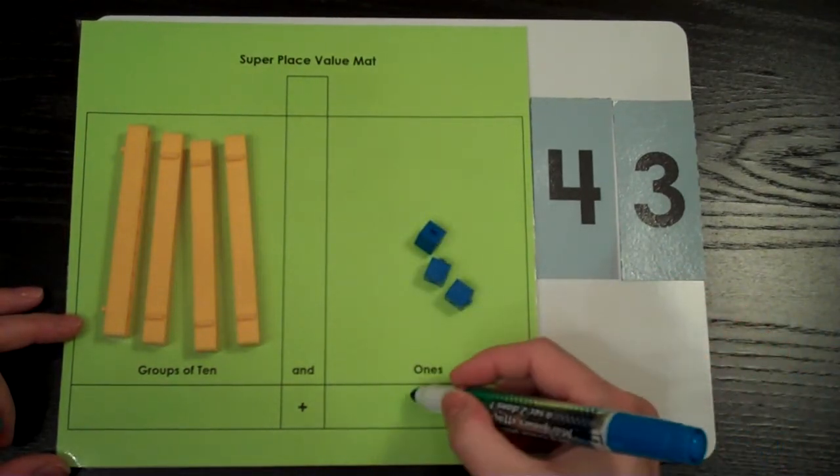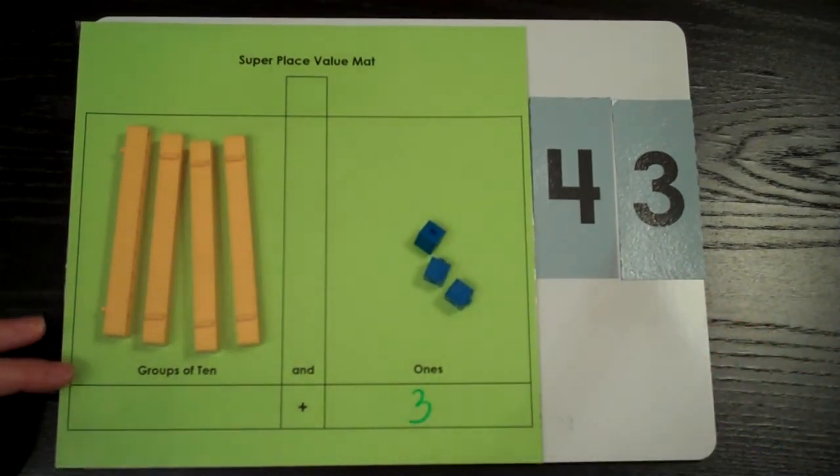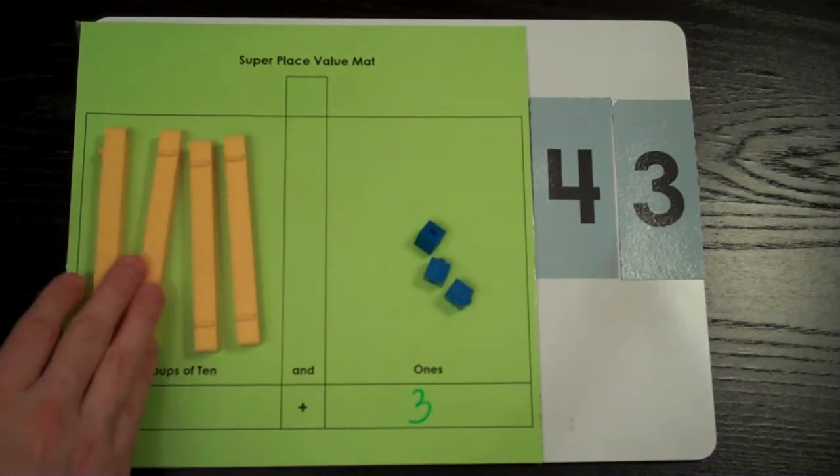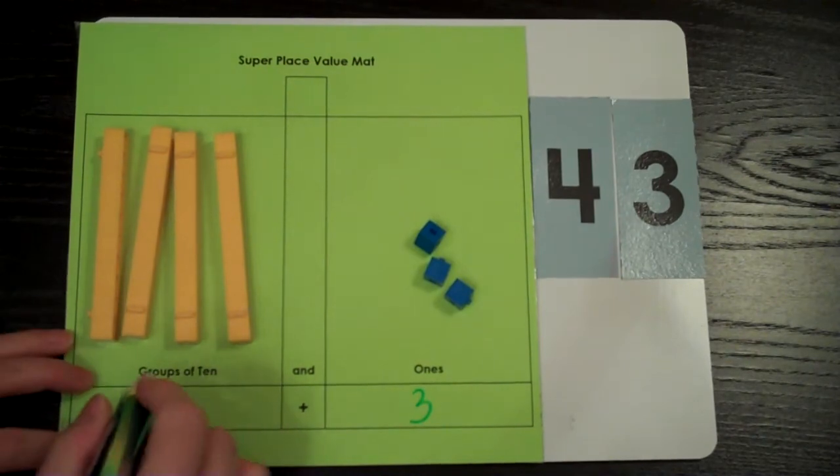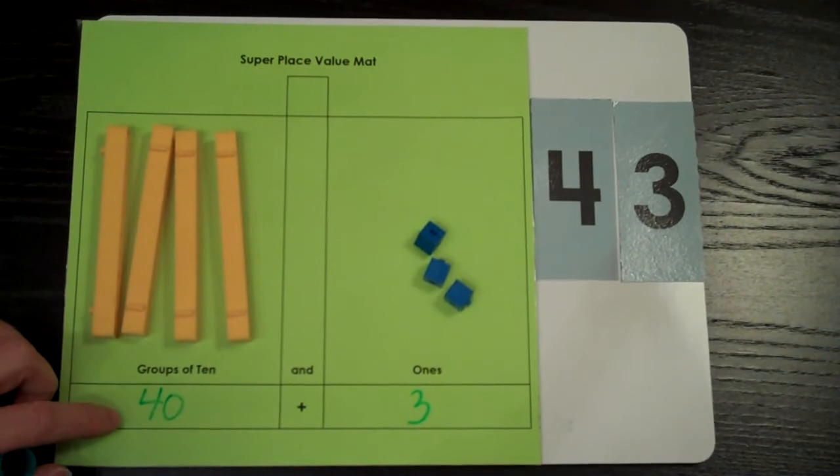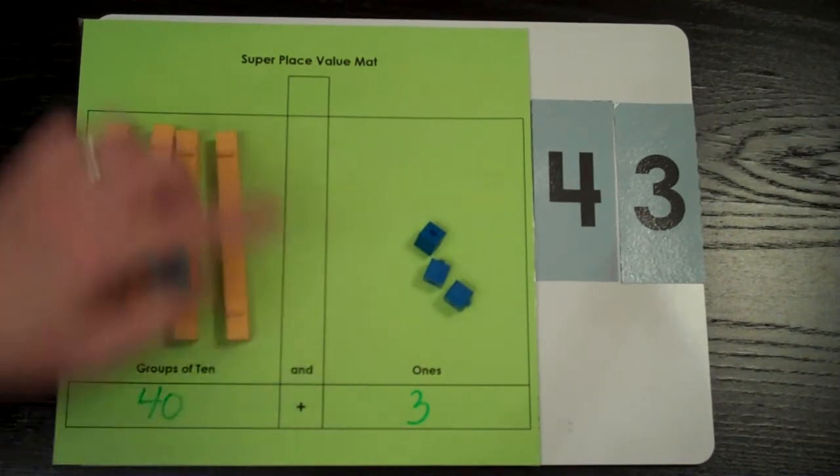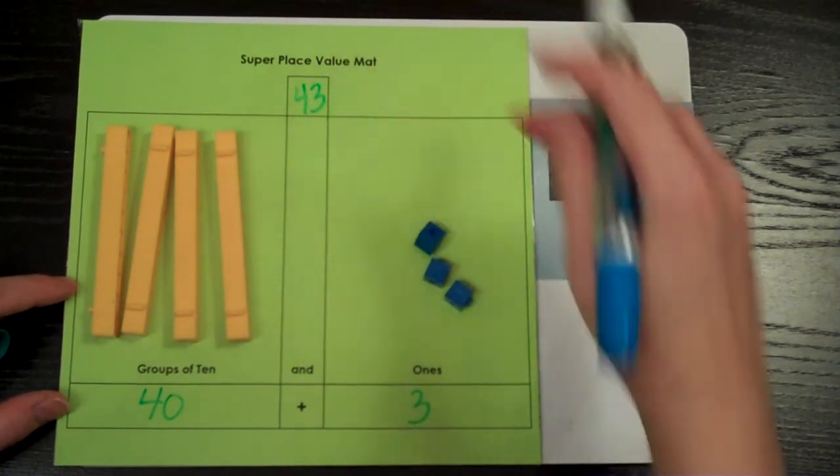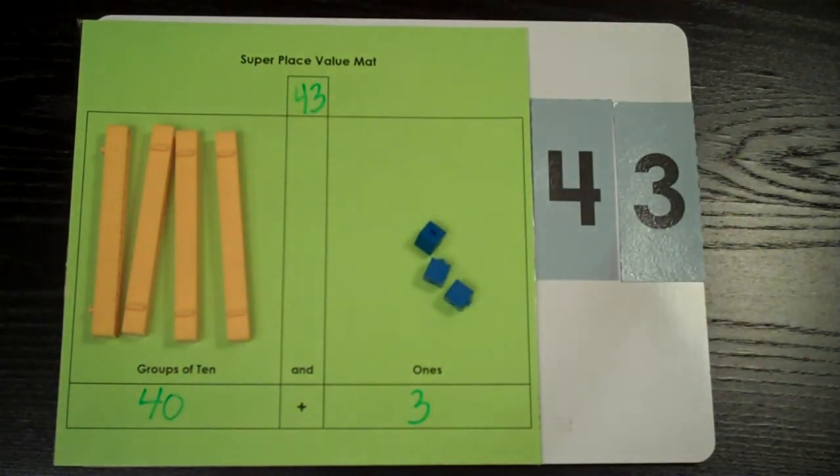I count the ones: 1, 2, 3. On the tens side, I count by tens: 10, 20, 30, 40. I have 40, which is 4 groups of 10. 40 plus 3 together makes 43, which is the numeral I have here.